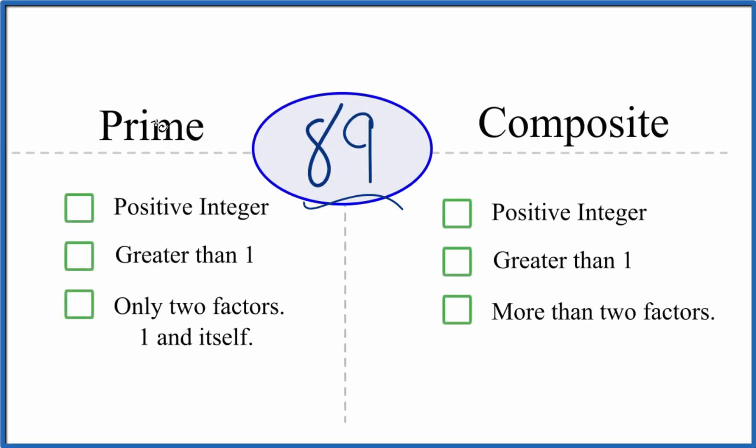Let's figure out whether 89 is a prime number or a composite number. And here's how we can do that. Let's first see if 89 is prime.